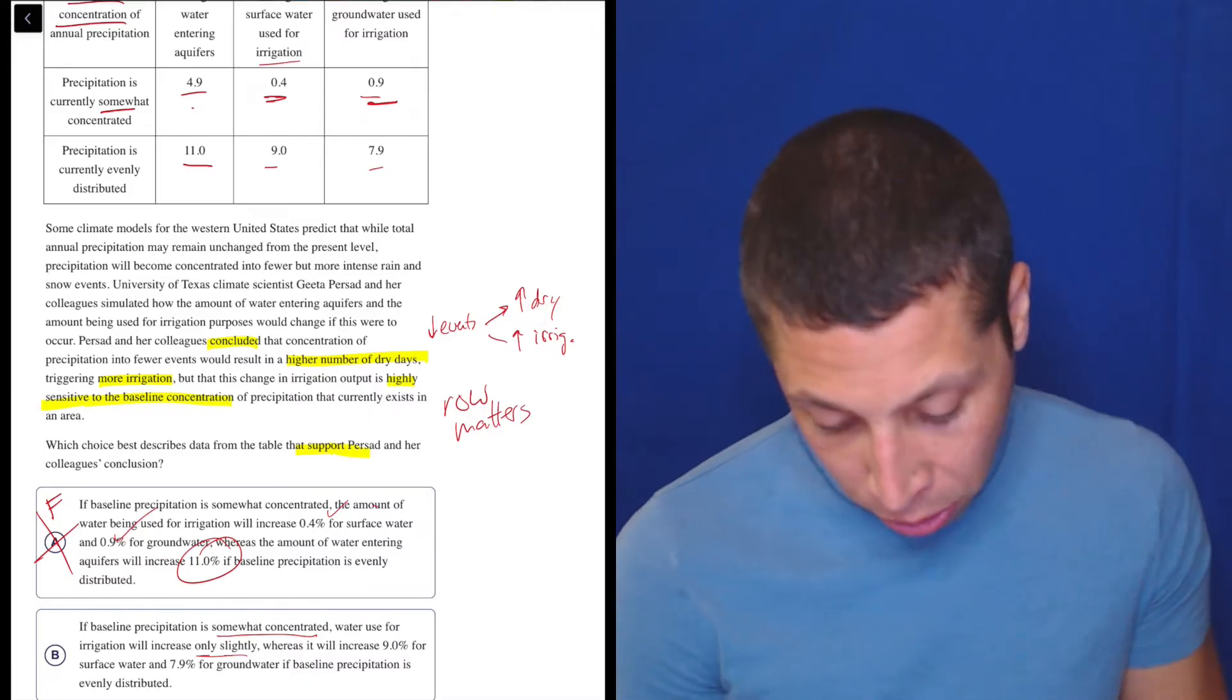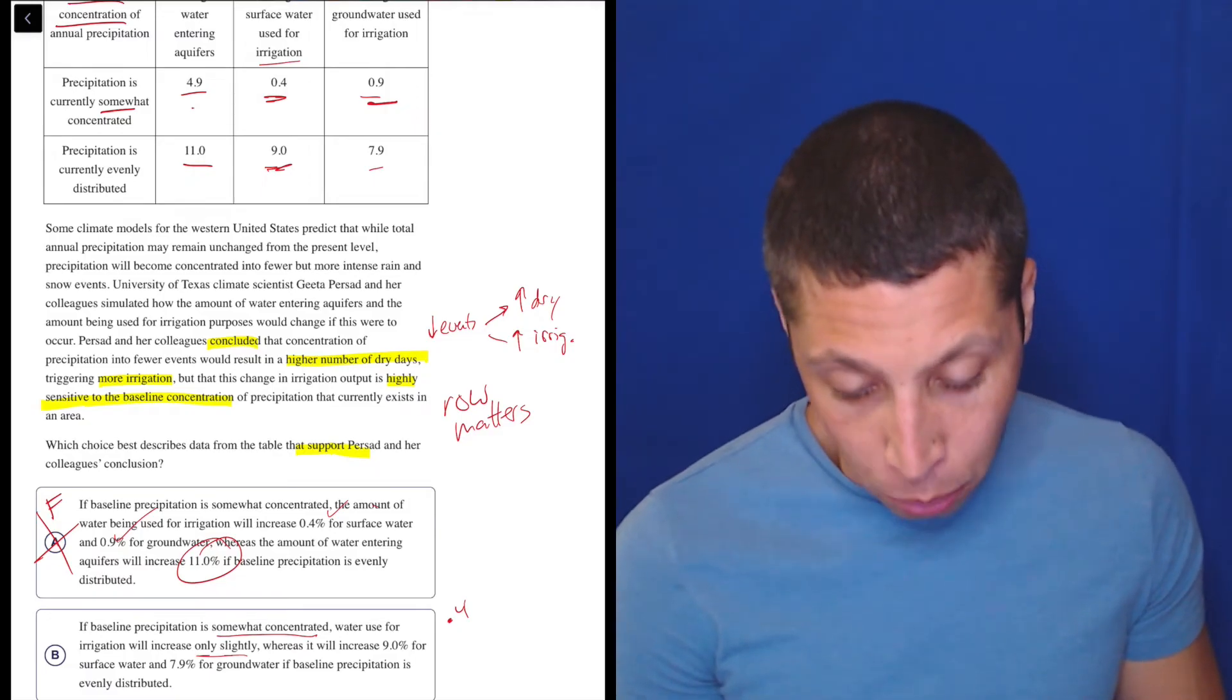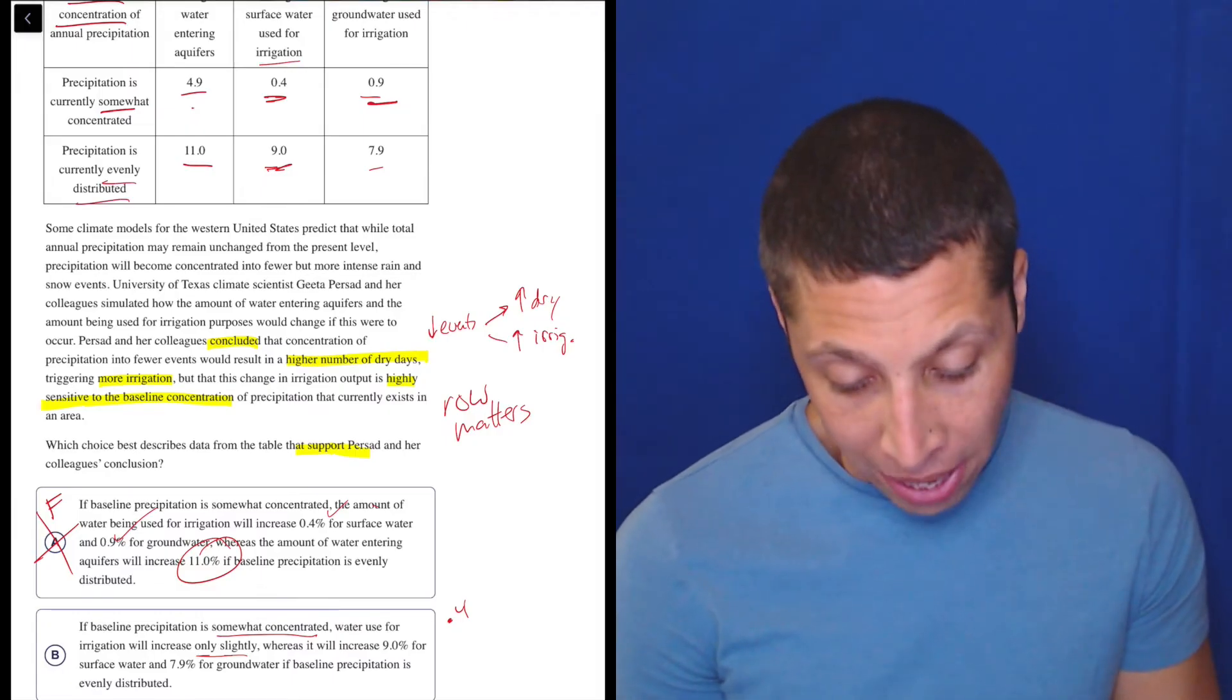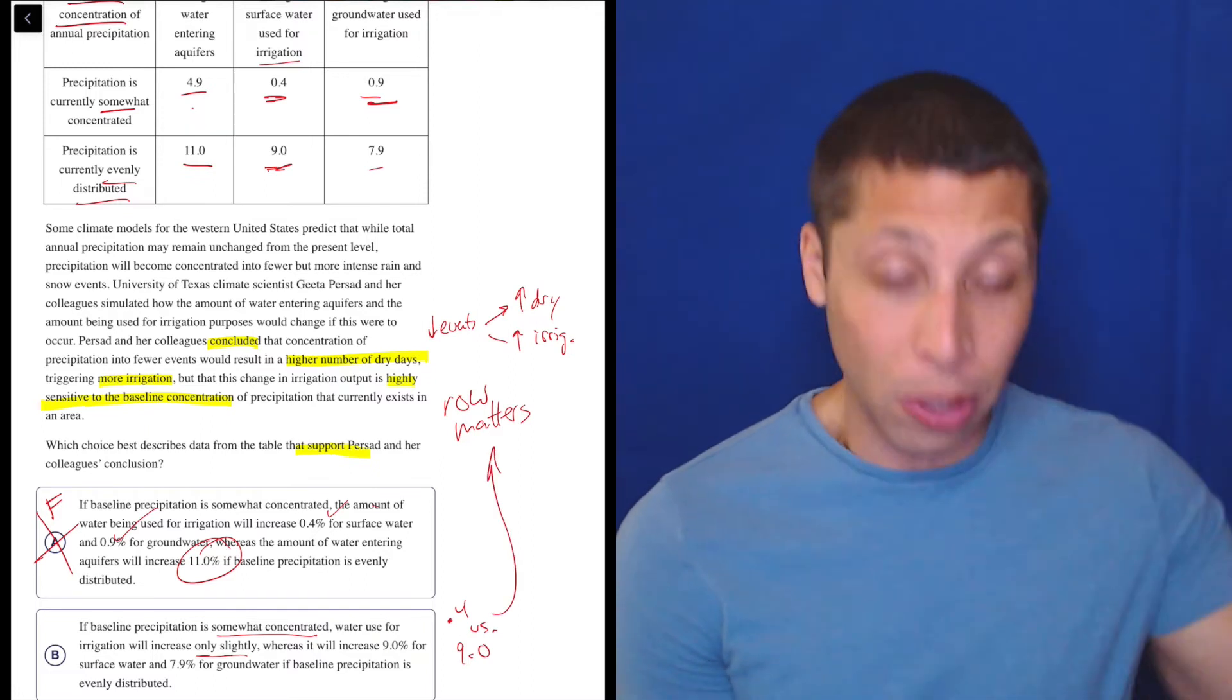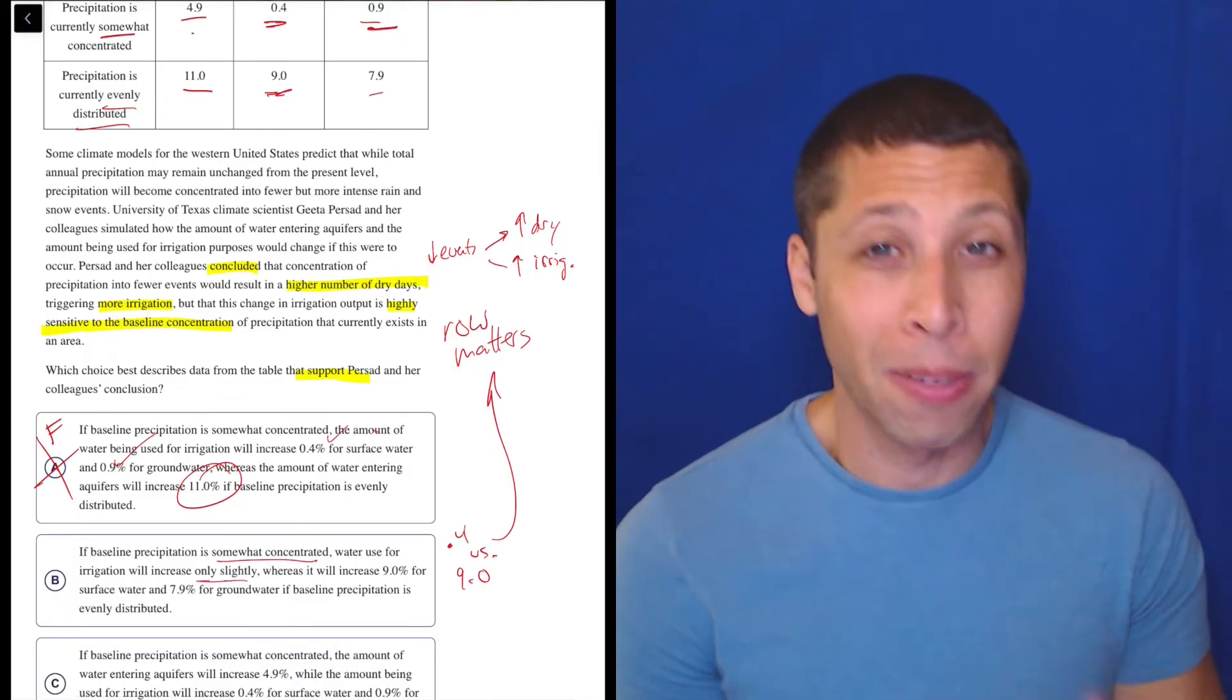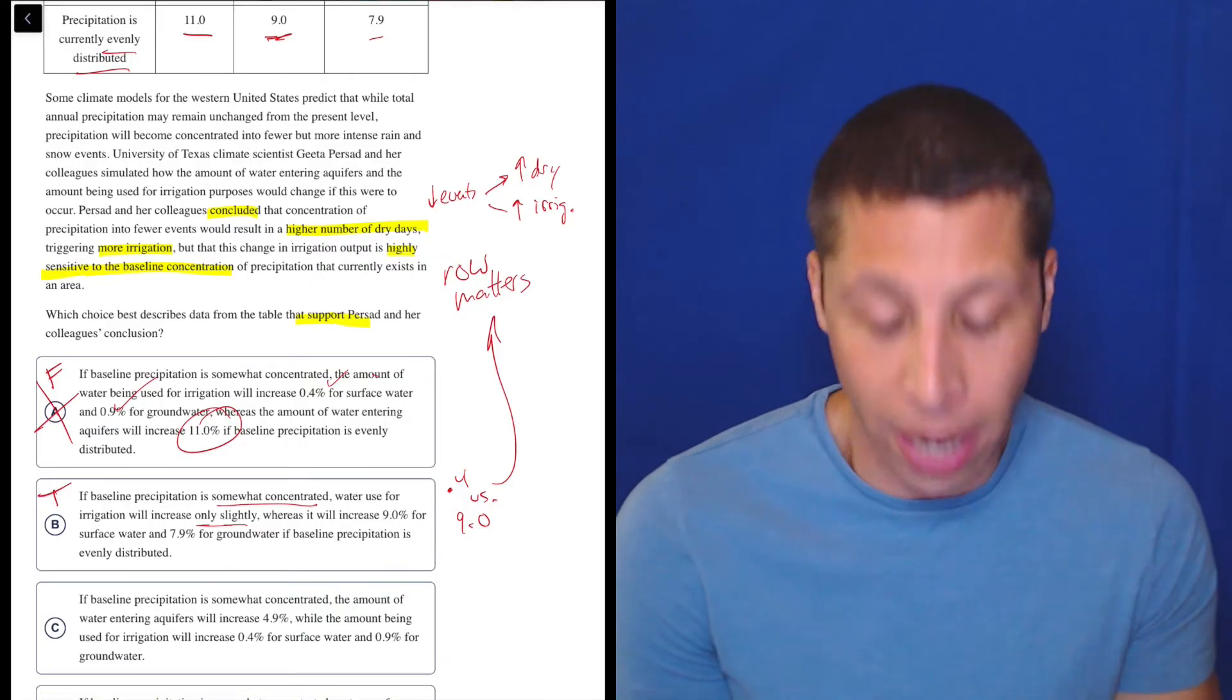And then it will increase 9% for surface water and 7.9% for groundwater if baseline precipitation is evenly distributed. That's the other row. So this is comparing basically the two numbers. This is telling us that the row matters. If we look at a different row, we're going to get a different set of numbers. So this is actually correct. I thought they were about to talk about a different column in the same row, so this is why you got to read carefully. I don't know, this seems true. This at least seems accurate. Whether or not that supports our conclusion yet, I don't really know.